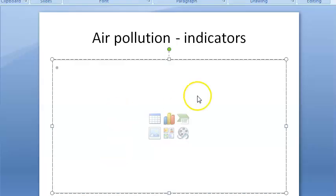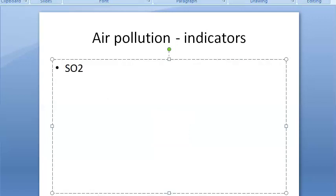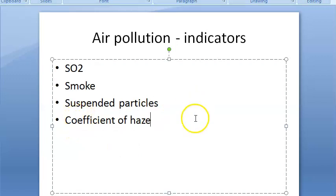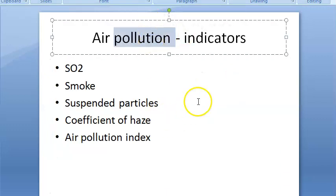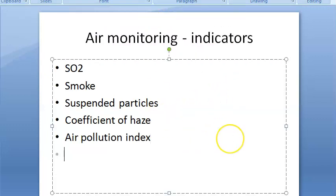Let us look at the indicators from which they gather all this information. The indicators of air monitoring are: sulfur dioxide index, smoke or soiling index, suspended particles index, coefficient of haze, air pollution index, and others.